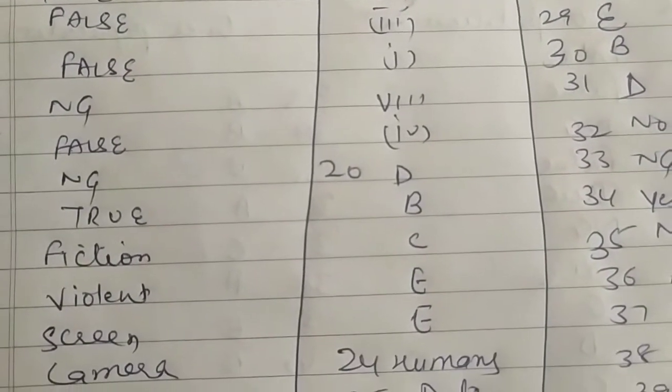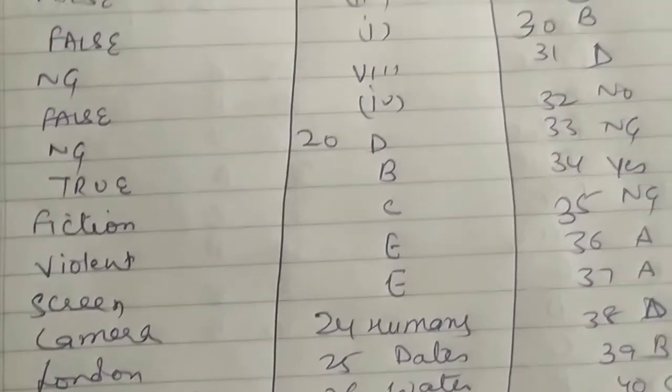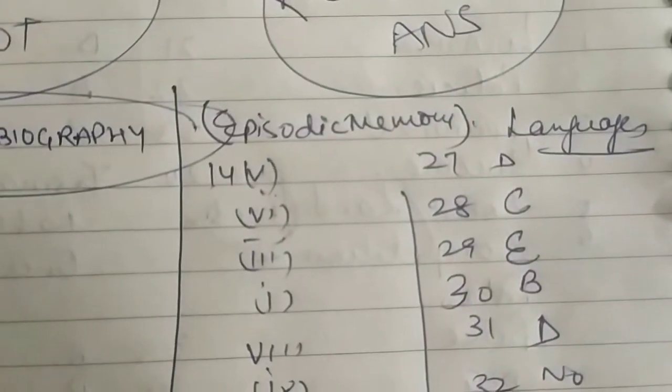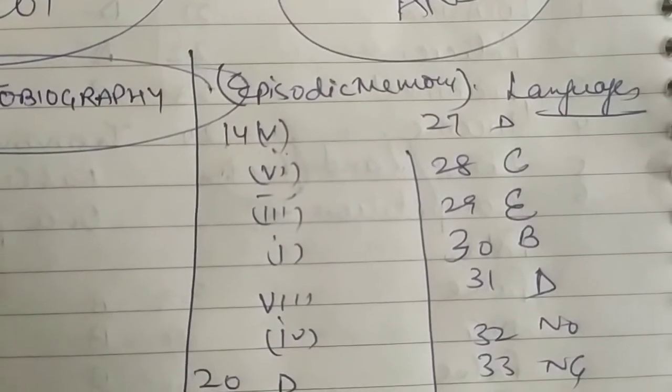E, E. Twenty-fourth is humans, twenty-fifth is dates, twenty-sixth is water, twenty-seventh is D, twenty-eighth is C, twenty-ninth is E.